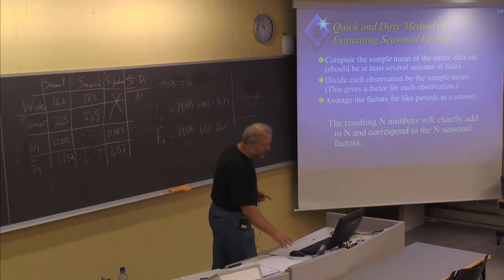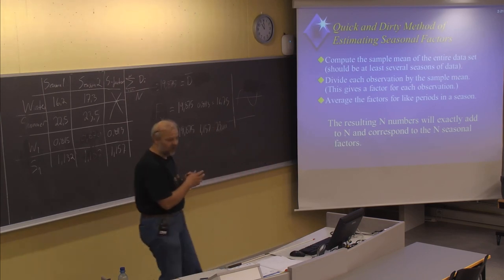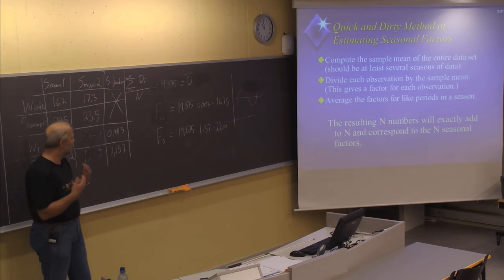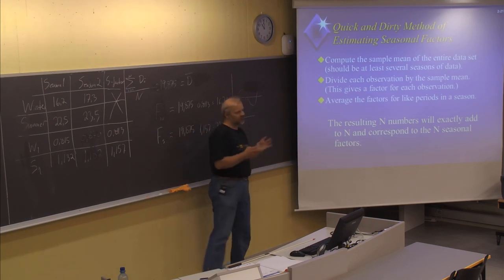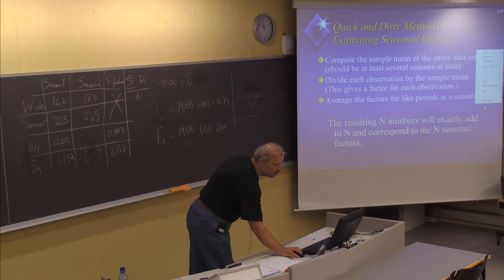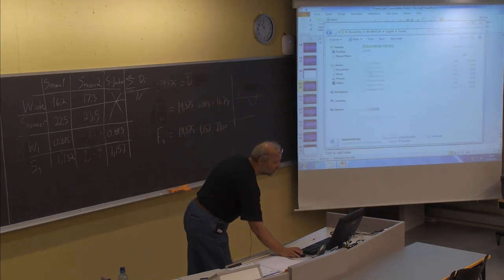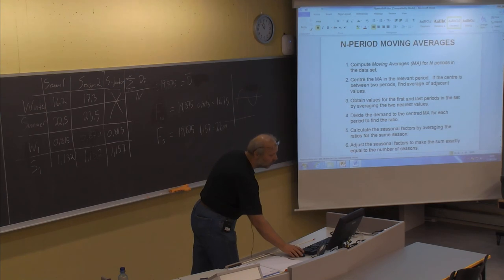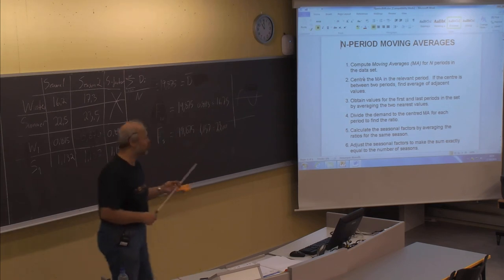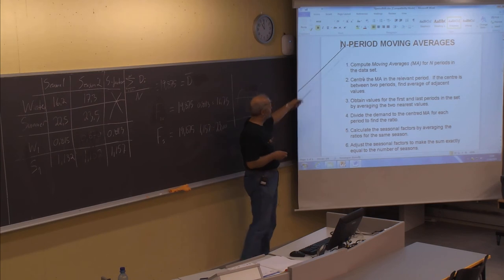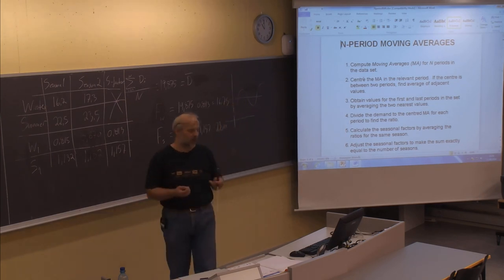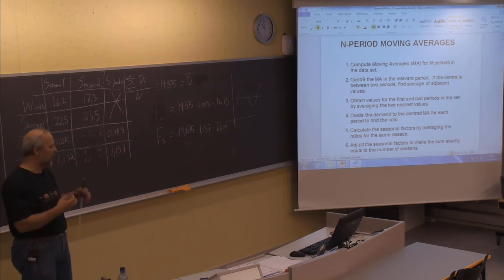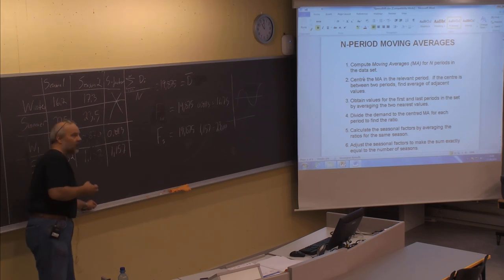We should now look at another method called the n-period moving average, which incorporates seasonal factors into the moving average technique. A Word file describing this method will be uploaded in Fronter. After a 15-minute break, we will look at an example of this technique and make a forecast for periods with different seasons and different seasonal factors.